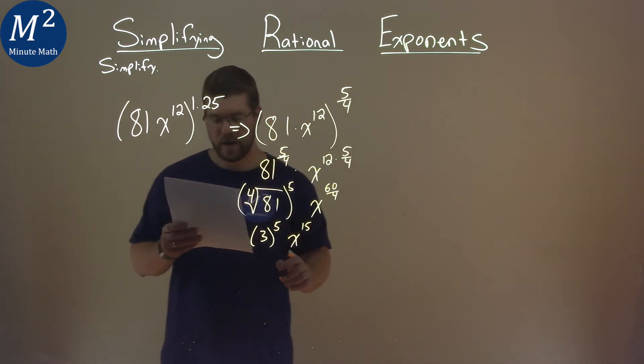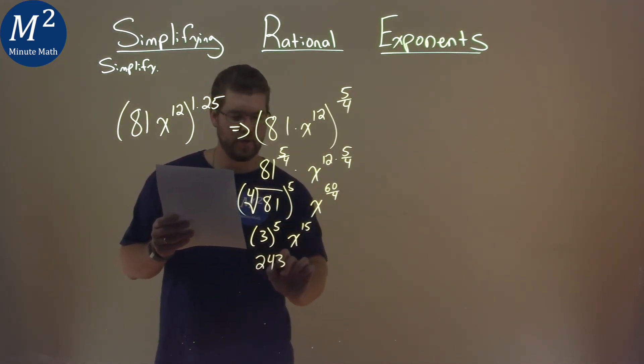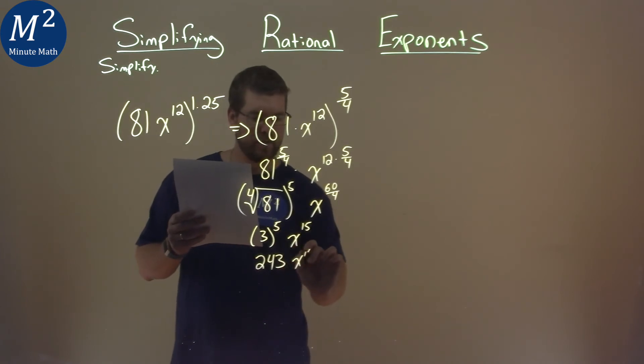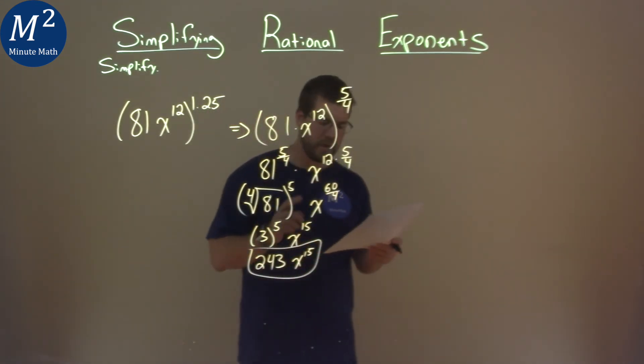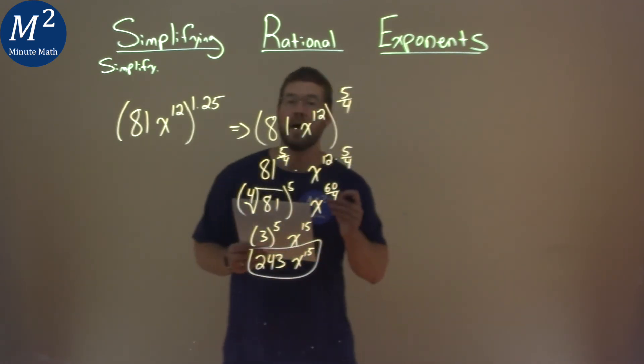Almost done. 3 to the 5th power is 243, and we have x to the 15th power right here. And so our final answer here is 243x to the 15th power.